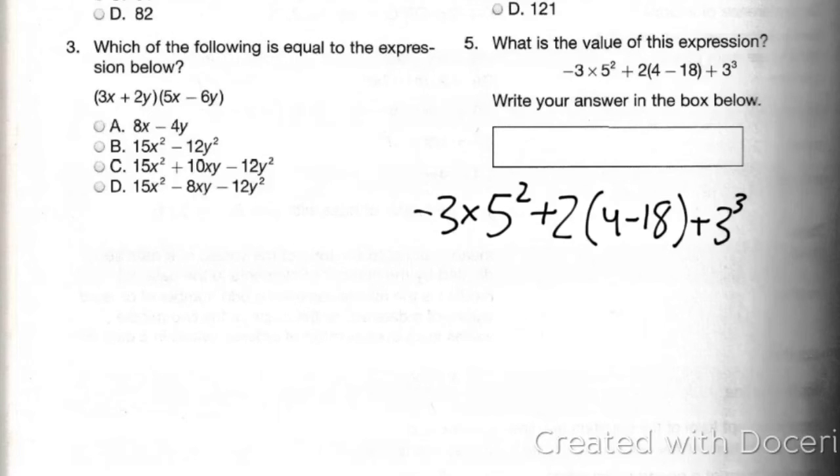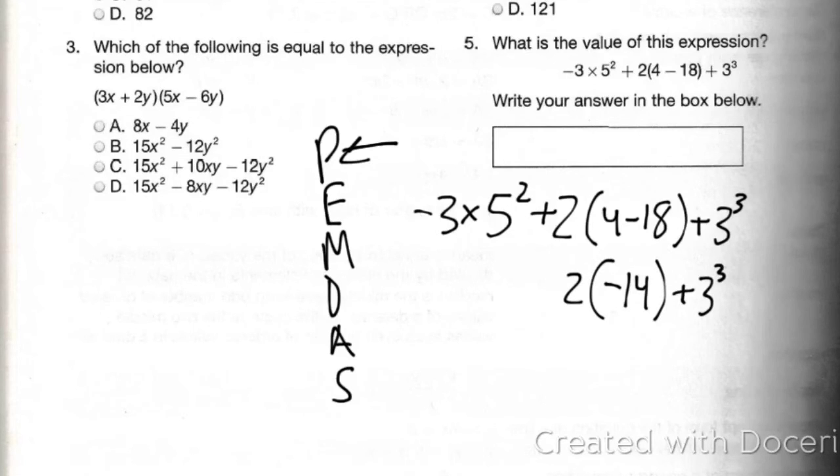With the order of operations, it's please excuse my dear Aunt Sally. And with that, we work with our P first, our parentheses first. So in the parentheses is this 4 minus 18. 4 minus 18 is negative 14. I'm just going to rewrite everything else so that it looks a little more organized and it's not overly confusing on what's going on here. Plus, I have the time to do so.